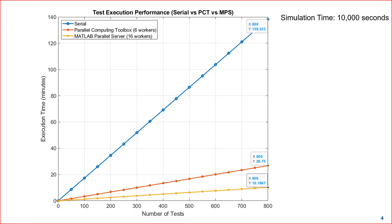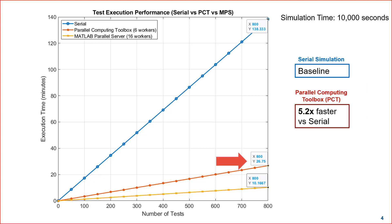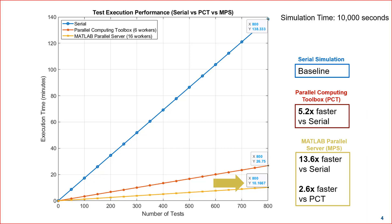Let's look at the execution performance numbers by comparing serial execution to Parallel Computing Toolbox with 6 workers and MATLAB Parallel Server with 16 workers. The x-axis shows the number of tests and the y-axis shows execution time in minutes. With serial simulation, 800 tests takes about 138 minutes. With the Parallel Computing Toolbox, the execution time takes about 26 minutes, which is 5.2 times faster than serial. And with MATLAB Parallel Server, the execution time is 13.6 times faster than serial and 2.6 times faster than Parallel Computing Toolbox.